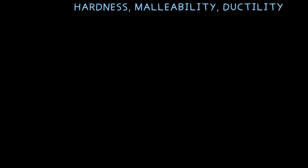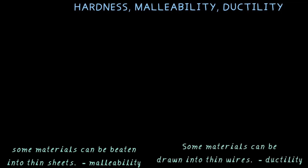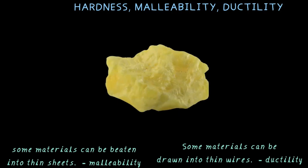Now let's check out the properties of hardness, malleability, and ductility. Hardness is just how hard or soft a substance is. Malleability is the property where materials can be beaten into thin sheets. And ductility is where materials can be drawn into thin wires.